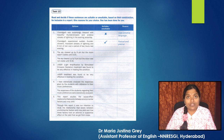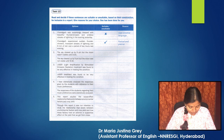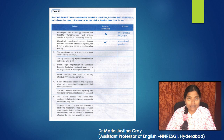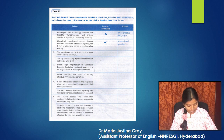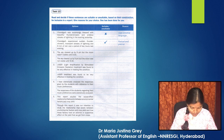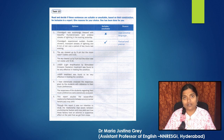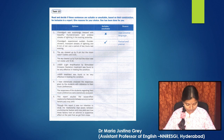Number five: 'This report studies the cause-effect relationship that exists between environmental factors and crop yield' — this is not suitable because the purpose is not clear. The suitable version: 'Through this report it was our intention to study the relationship that exists between environmental factors and crop yield and how these factors have an adverse or supportive effect on the yield that we get from crops.' The purpose is clear in this statement.